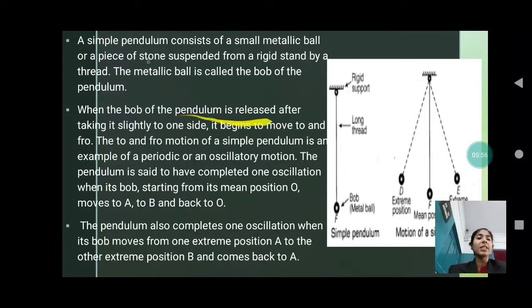When the bob of the pendulum is released after taking it slightly to one side, it begins to move to and fro. The to and fro motion of a simple pendulum is an example of a periodic or an oscillatory motion. The pendulum is said to have completed one oscillation when its bob, starting from its mean position O, moves to A and B, and comes back to the position. This movement from F to D, D to F, F to E, E to F is the whole position when one oscillation gets complete.